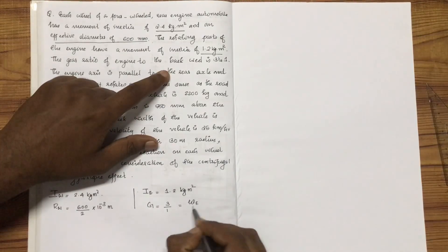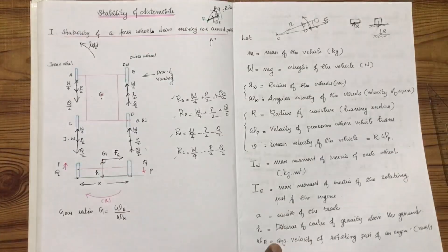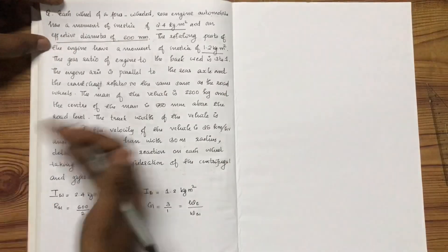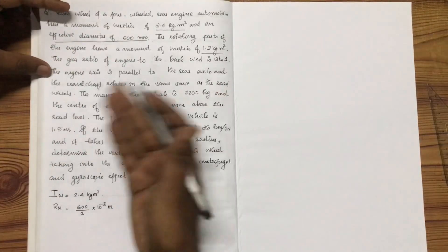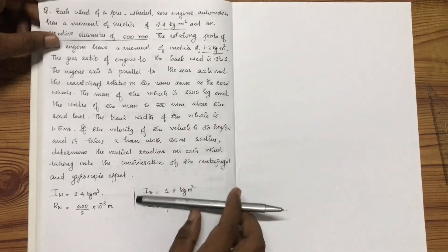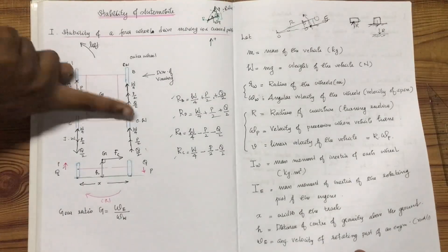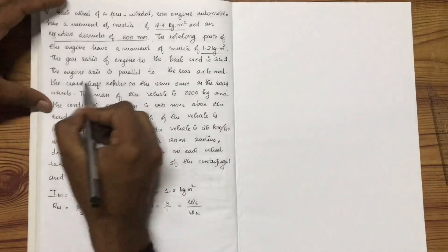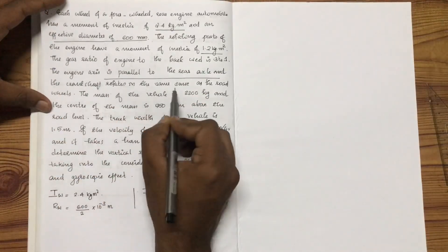The gear ratio G is omega engine divided by omega wheel. That is the gear ratio of the rear axle. The engine axis is parallel to the rear axle, so the crankshaft rotates in the same sense.